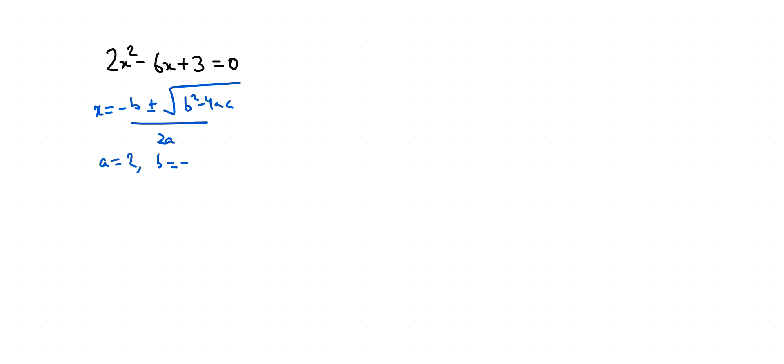So x equals (-(-6) ± √((-6)² - 4(2)(3))) / 2(2).